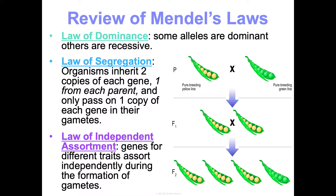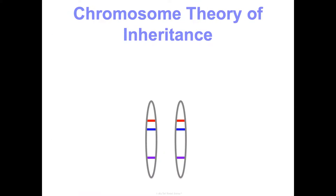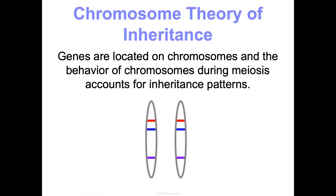I say all that with a huge asterisk, because what we've actually found is a bit more complex than just those three rules — that's why we have this whole concept. We also know the chromosome theory of inheritance, which says genes are located on chromosomes and what happens to those chromosomes during meiosis accounts for what we inherit. This will come up again in Concept 3 when we talk about mutations.